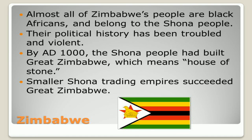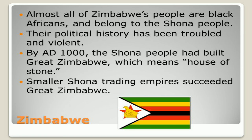By A.D. 1000, the Shona peoples had built Great Zimbabwe, which means House of Stone, and smaller Shona trading empires succeeded Great Zimbabwe. Here also we see a flag of Zimbabwe. Children, you all understand — Rhodesia is the old name of Zimbabwe. Rhodesia is now Zimbabwe.